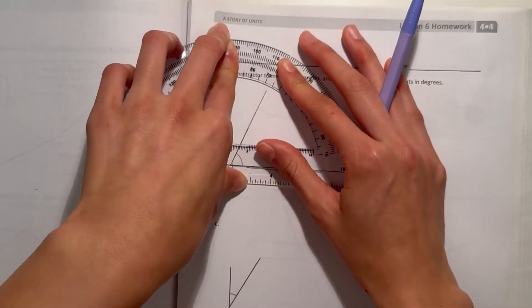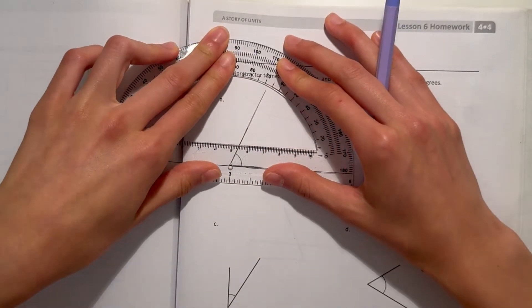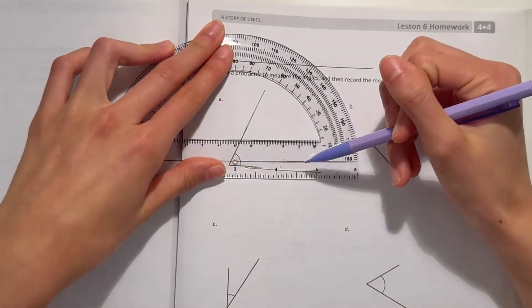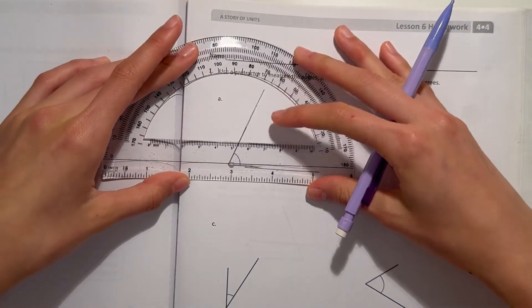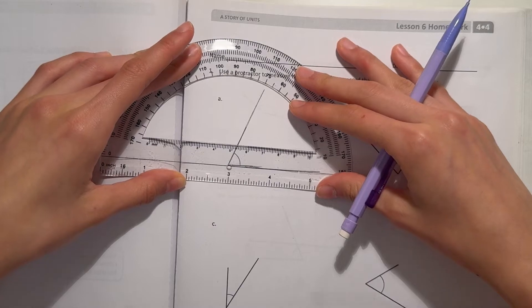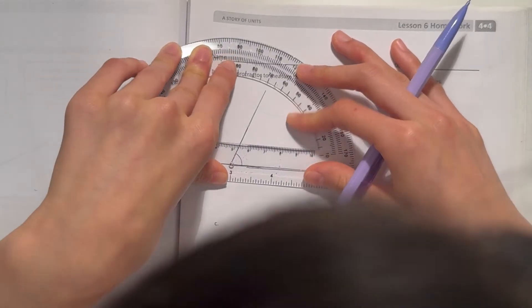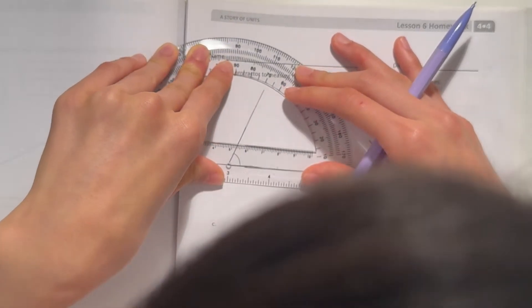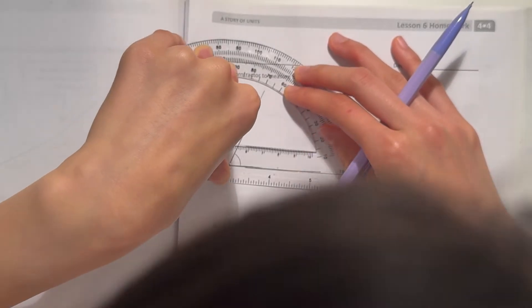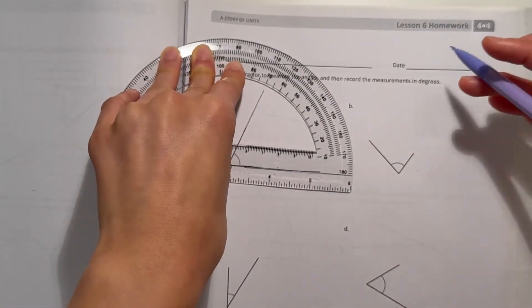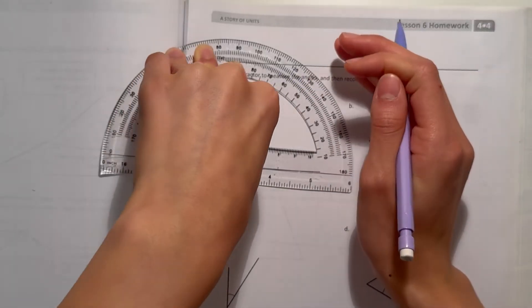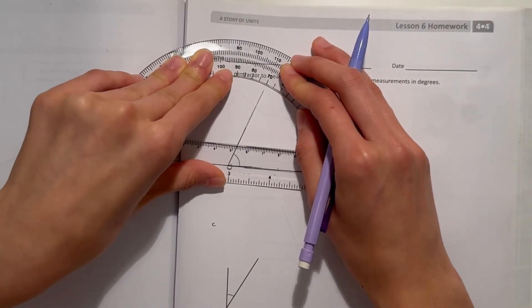So now, make sure the line over here versus zero, that's zero, matches up with the line here. So now that we have our thing, you can see that it's about 70 degrees.